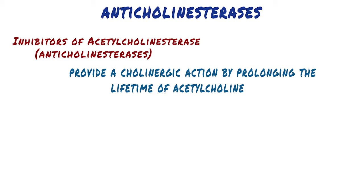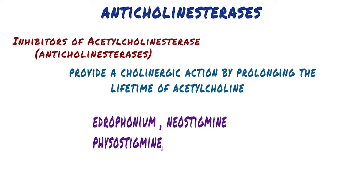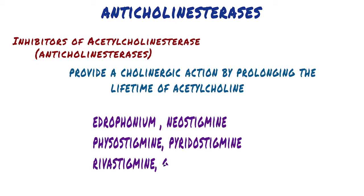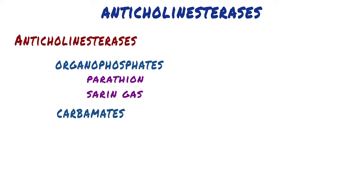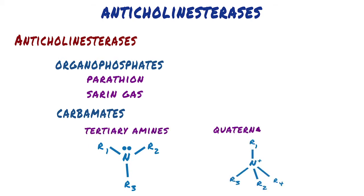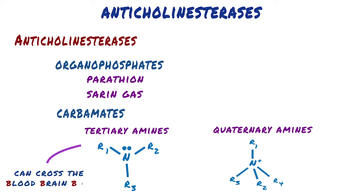Examples of anticholinesterases include edrophonium, neostigmine, physostigmine, pyridostigmine, rivastigmine, galantamine, and donepezil. Anticholinesterases are either organophosphates or carbamates. Organophosphates, like parathion, are often used as pesticides. The chemical weapon sarin gas also belongs to this group. The most clinically used anticholinesterases are carbamates, and they are either tertiary or quaternary amines. This is important because only the anticholinesterases with a tertiary structure can cross the blood-brain barrier and enter the brain.